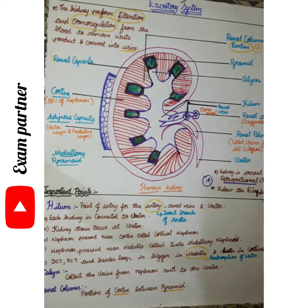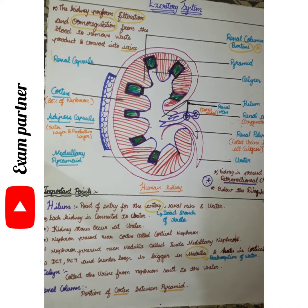Next is the cortex. What is the cortex? The cortex contains 85% of nephrons. The nephron is the functional unit of the kidney. If the kidney performs filtration, it is the nephron that does the work. Most nephrons are located in the cortex.